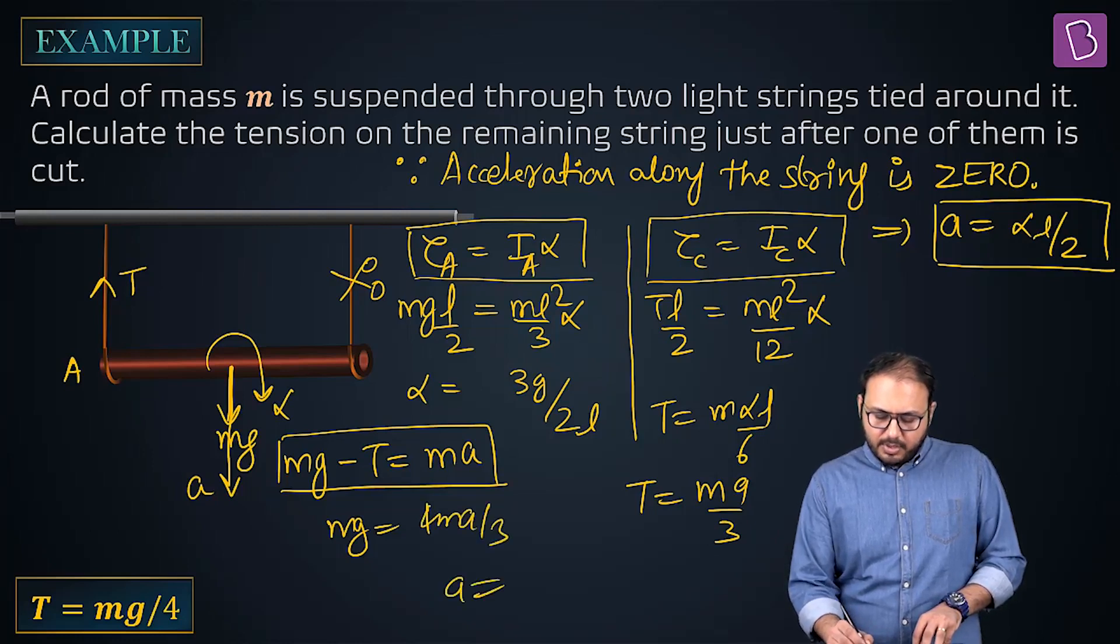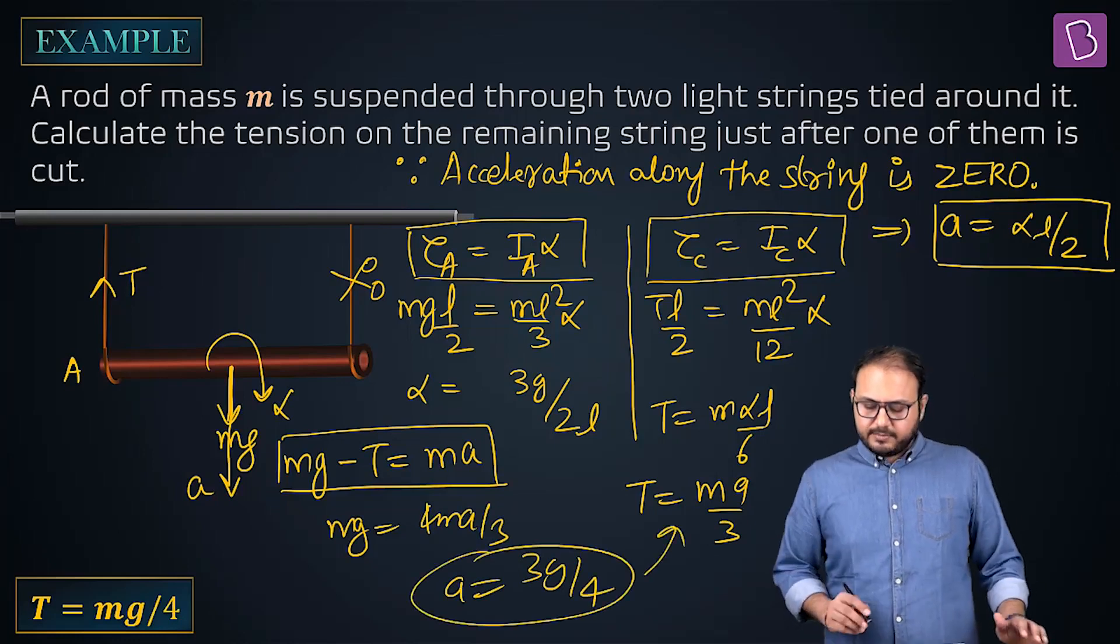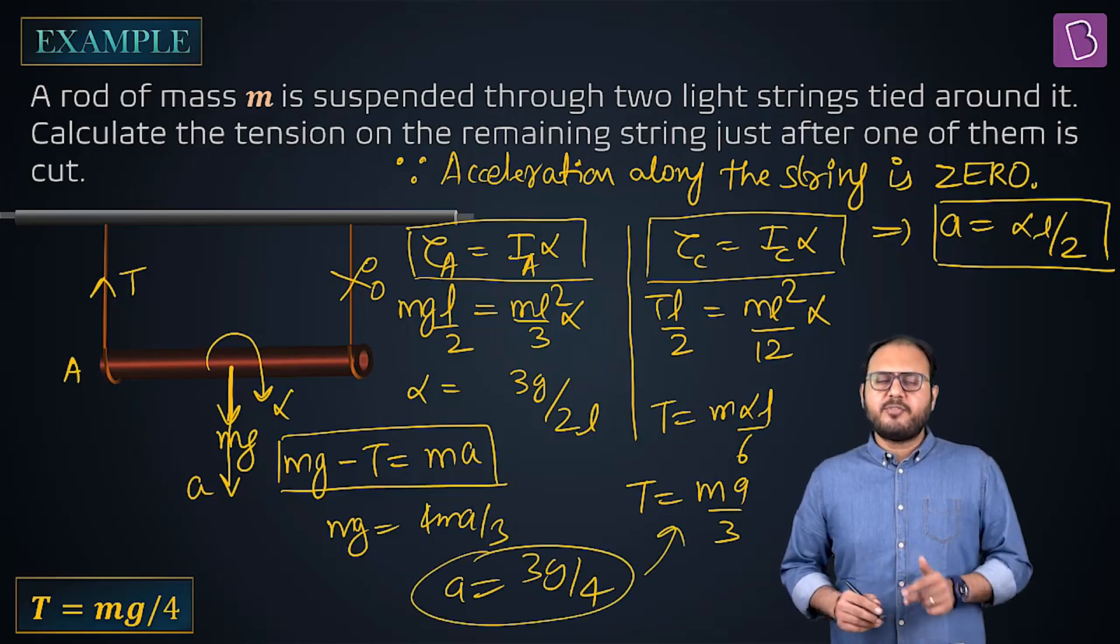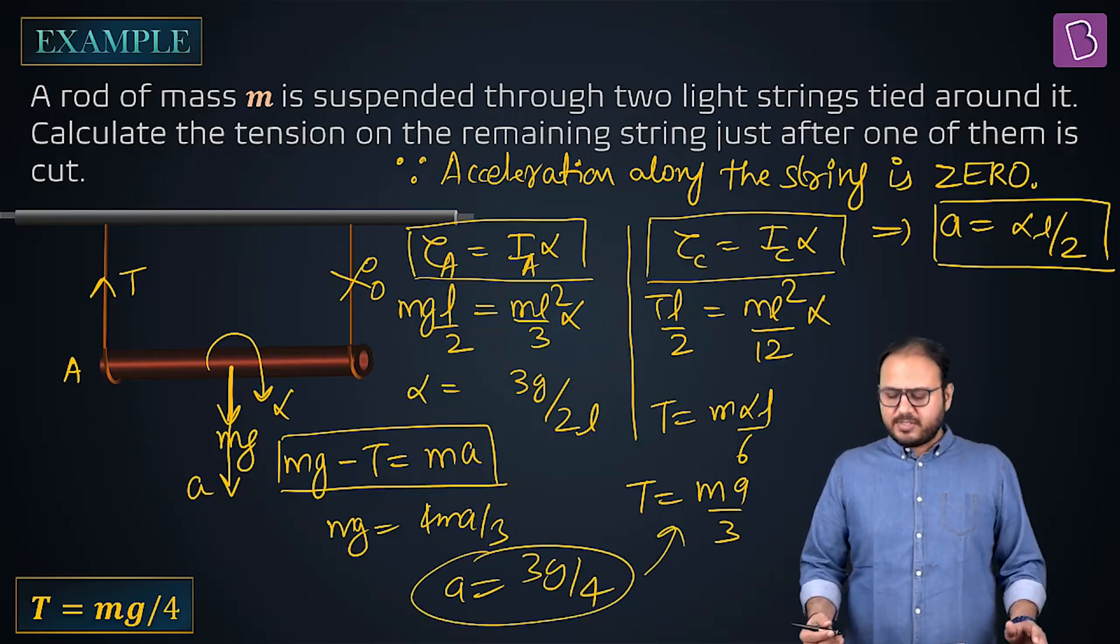So A becomes equal to 3G by 4. See, if A is 3G by 4, put it back M by 3 into 3G by 4, 3-3 cancel, Mg by 4, satisfied, happy.